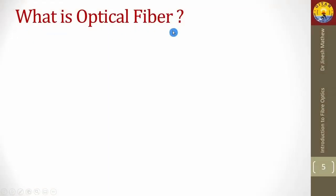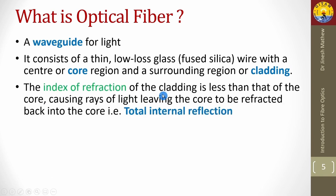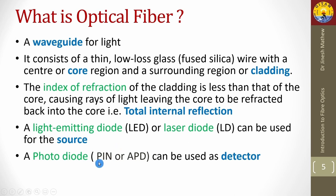What is optical fiber? Optical fiber is a waveguide for light — it guides light through it. It consists of a thin, low-loss fused silica glass wire with a center core region and a surrounding region called cladding. The index of refraction of cladding is less than that of the core, causing rays of light leaving the core to be refracted back into the core. That is called total internal reflection. A light emitting diode, LED, or laser diode can be used as the source, and a photodiode — either a pin photodiode or an avalanche photodiode — can be used as a detector in an optical fiber system.